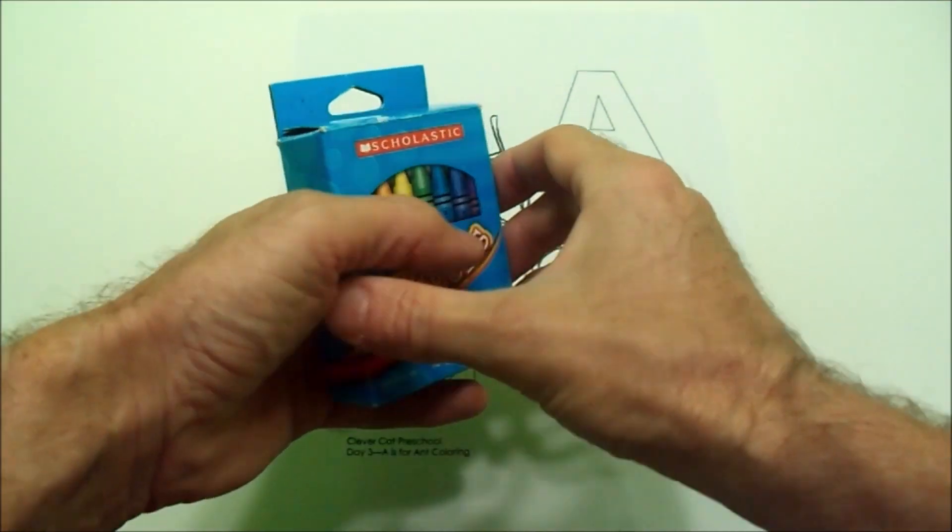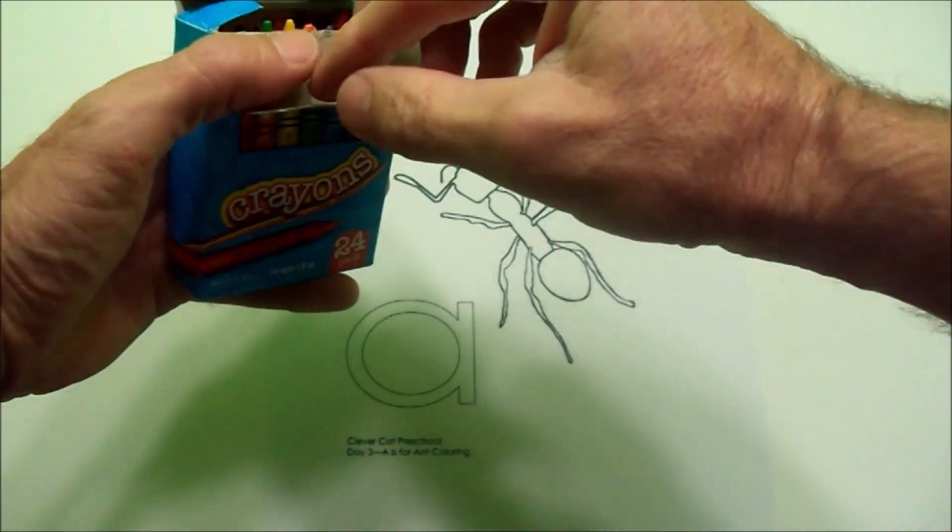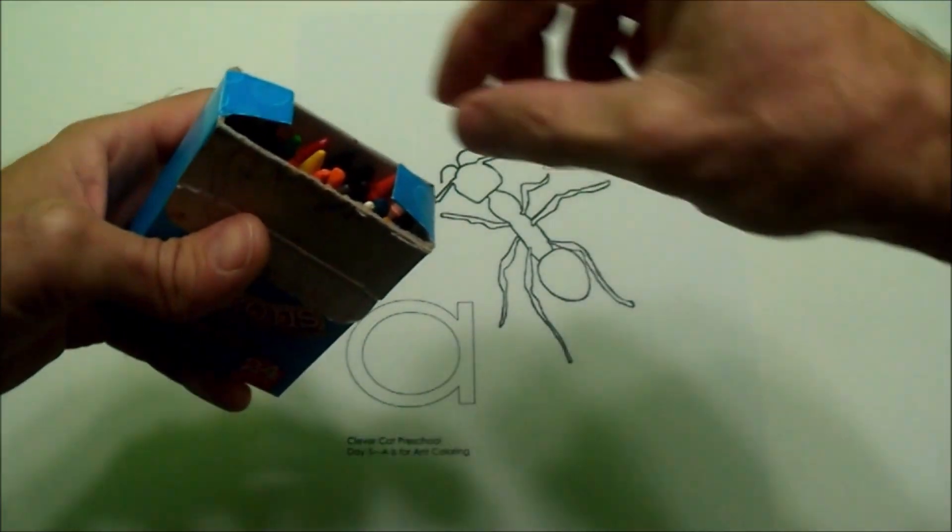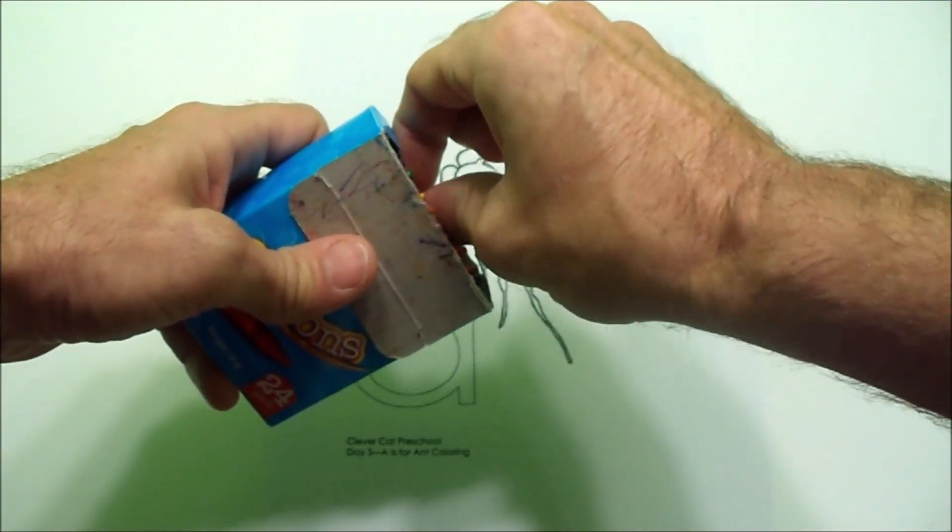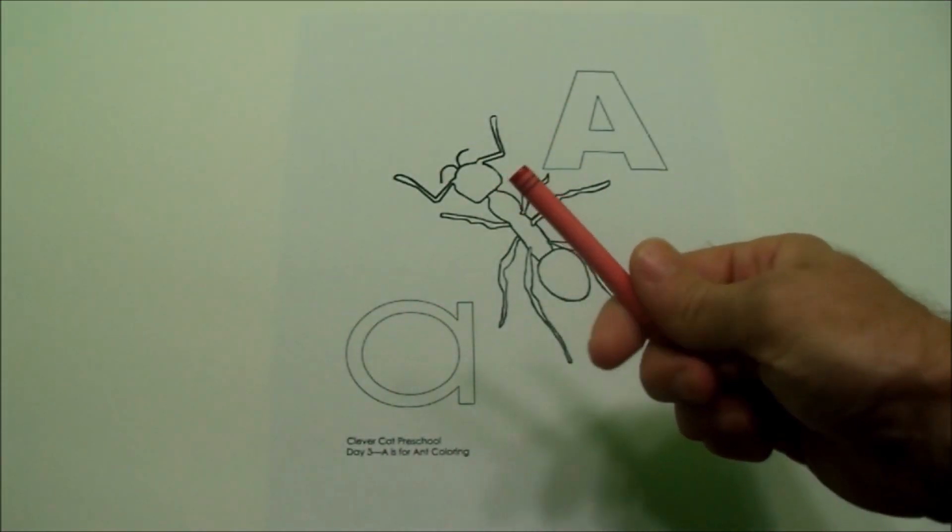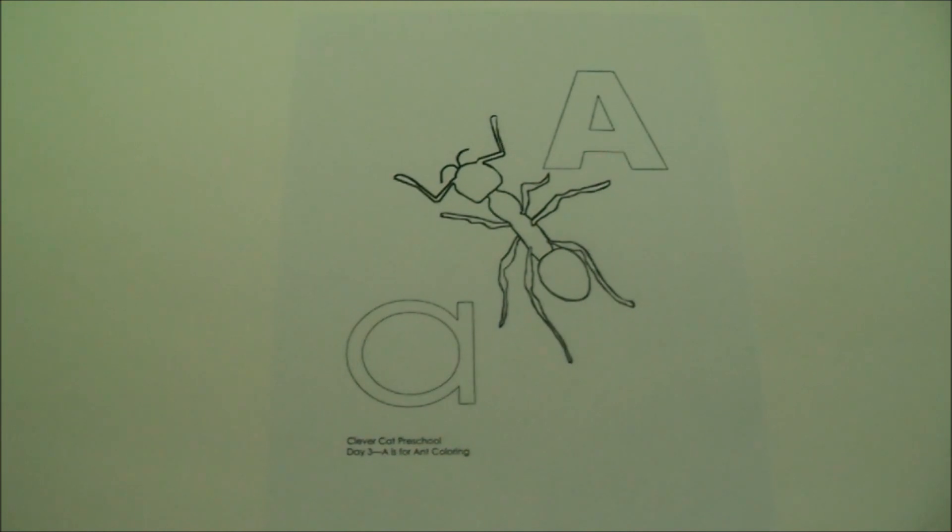We can get a crayon now from your basic supply kit. Open your crayon up. We are going to color our ant. You can pick any color. Use your imagination. I am going to use red. What color will you use?